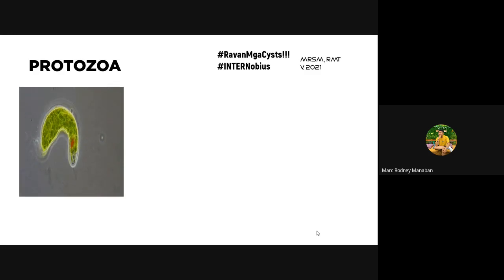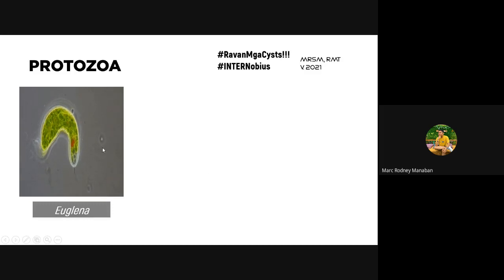Here are some examples of non-pathogenic protozoa. You may remember from second year performing a hay infusion — taking canal water, placing it in a jar with boiled grass, and examining it under the microscope. Examples include Euglena, a flagellate with one active flagellum and a chloroplast that plays an important role in photosynthesis.